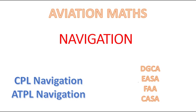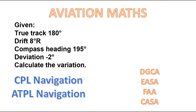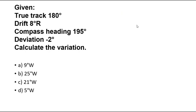Hello everyone. Welcome to Aviation Maths Navigation Videos. Question for us today is given true track is equal to 180 degrees, drift is 8 degrees right, compass heading is 195 degrees, deviation is minus 2 degrees. We need to calculate the variation and our options are as indicated below.